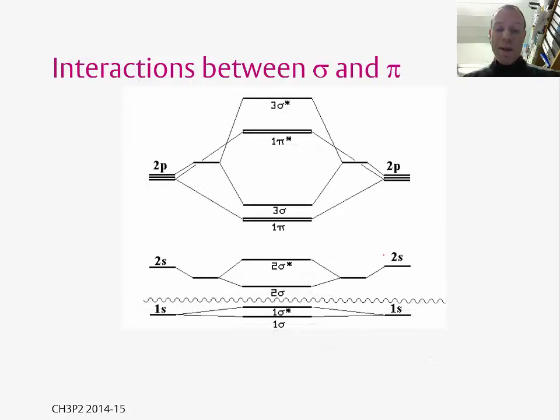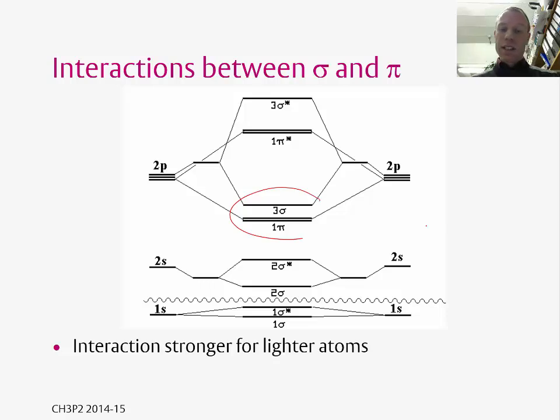Of course, you'll remember from first-year lectures that the order of these orbitals here varies as you go across the first row of the periodic table. For later on, at the beginning of the rows in the periodic table, you get this ordering shown in the figure here, and then once you go between nitrogen and oxygen, this order switches around and gives the figure we just saw on the previous slide.